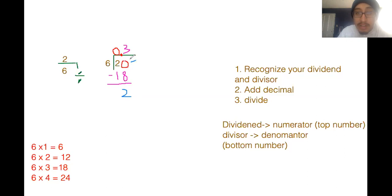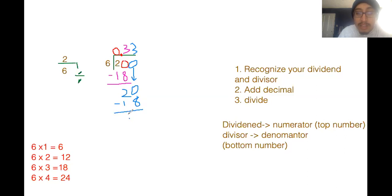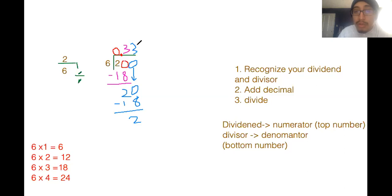So now what do you think is going to happen? We end up with two again. We're going to add another zero and bring it down. Some of you may be noticing already that there's going to be a pattern — we're going to keep ending up with the same number. How many times can six go into 20? That's familiar — it's going to be three again, minus 18, and we end up with two again. So this is going to end up being 0.3333... going on forever. In this case, I only want you to go two decimal places, so 0.33 is fine.